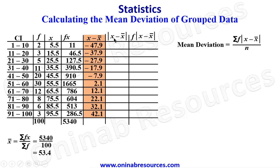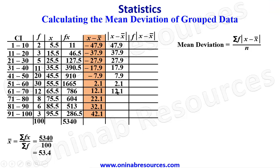For the absolute value column, we return all values as positive. So negative 47.9 becomes 47.9; 37.9; 27.9; 17.9; 7.9; and the remaining positive values stay as they are: 2.1; 12.1; 22.1; 32.1; 42.1.